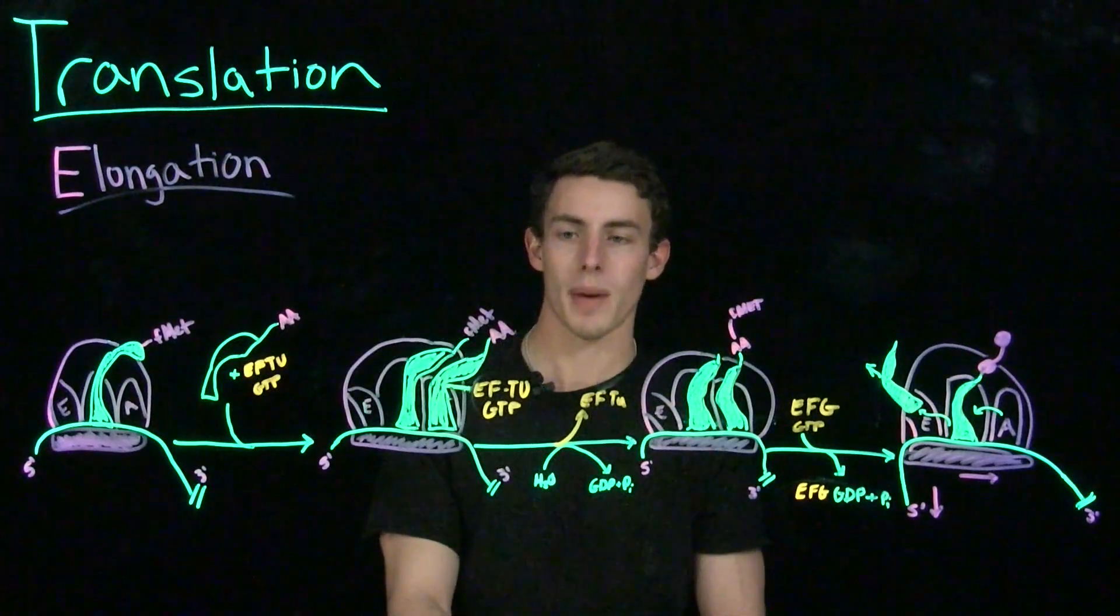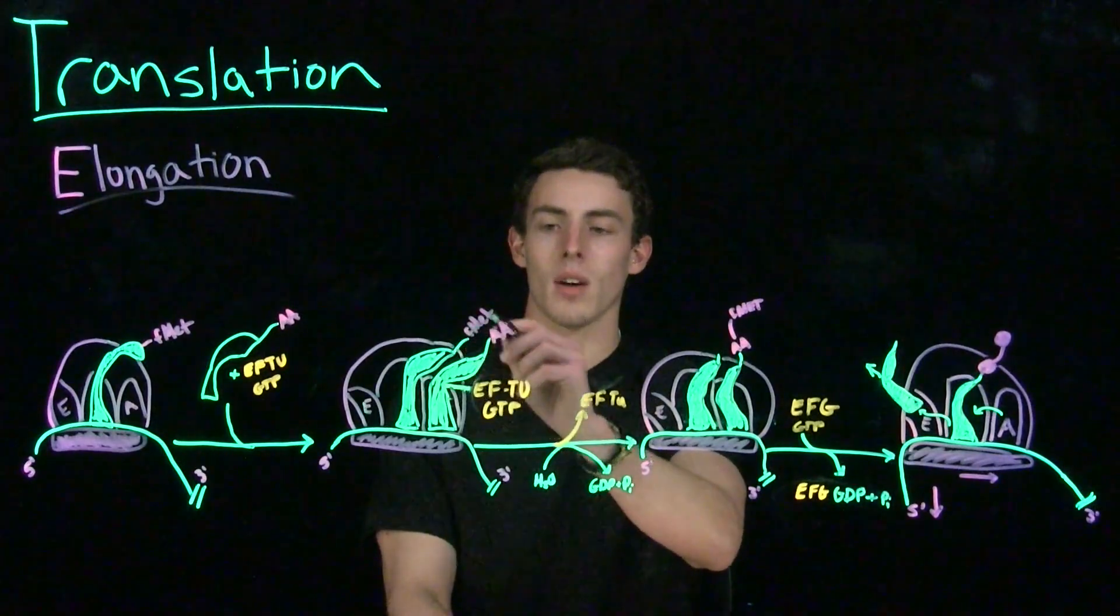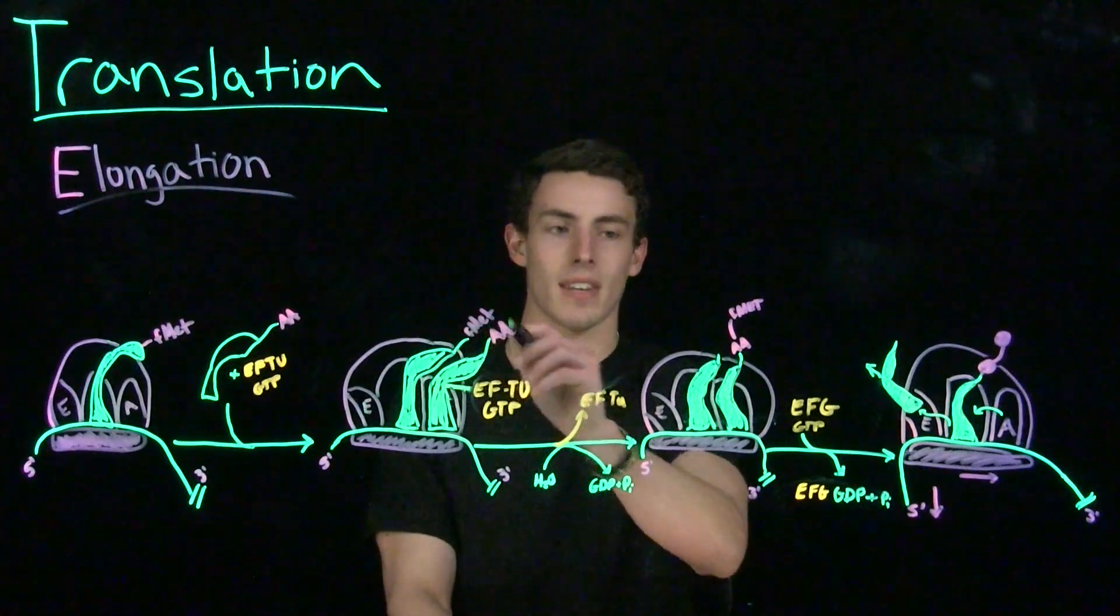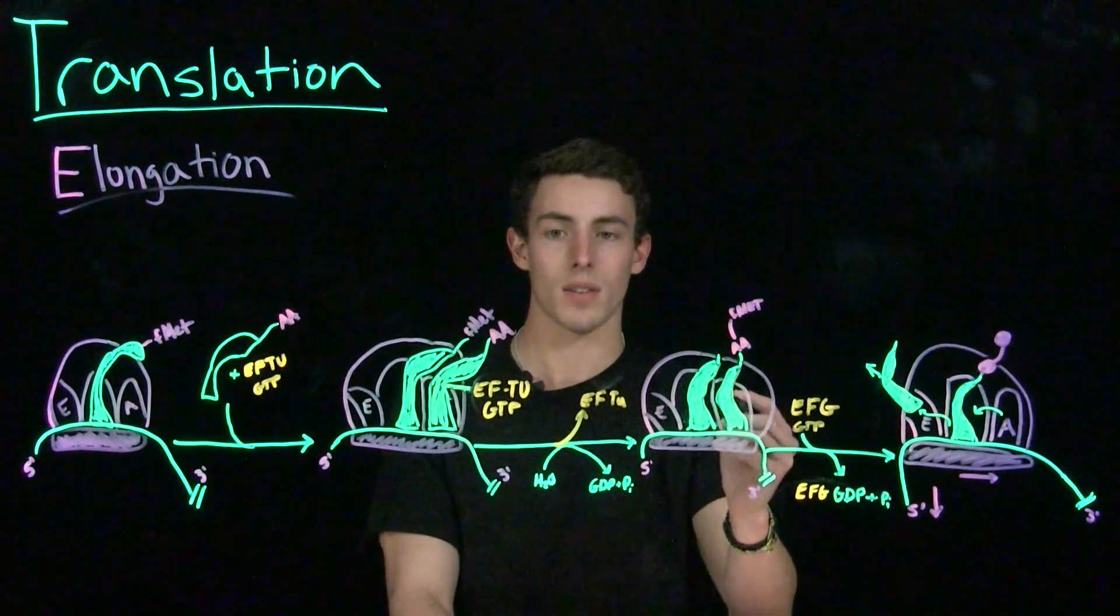So the amino acid or polypeptide, in this case informal methionine, has been transferred from the tRNA in the P site onto the amino acid on the tRNA in the A site. Now that this has happened, we have to translocate this to continue the process of translation.